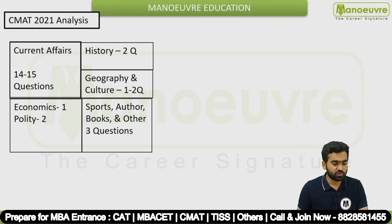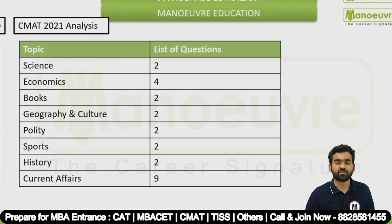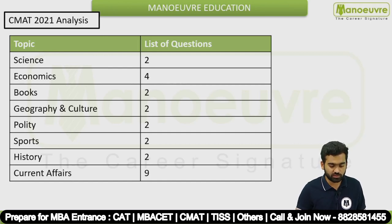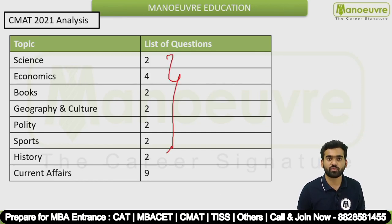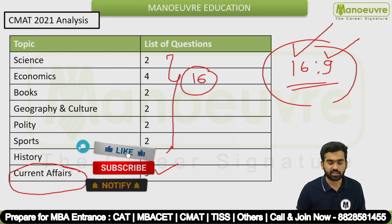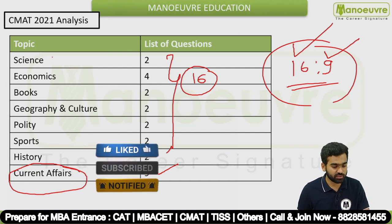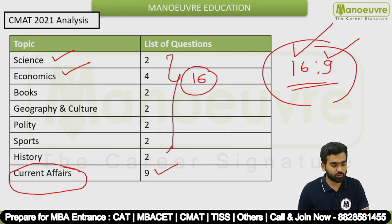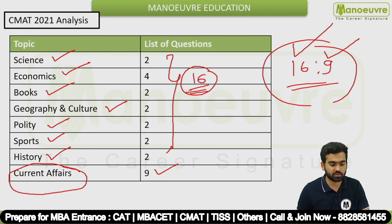Now let's see the CMAT 2021 General Awareness analysis. In GA, some questions were based on static affairs and some on current affairs. 16 questions were from static affairs and 9 from current affairs — a ratio of 16:9. In detail: Science — 2 questions, Economics — 4, Books — 2, Geography and Culture — 2, Polity — 2, Sports — 2, History — 2. Total 16 static and 9 current affairs questions.